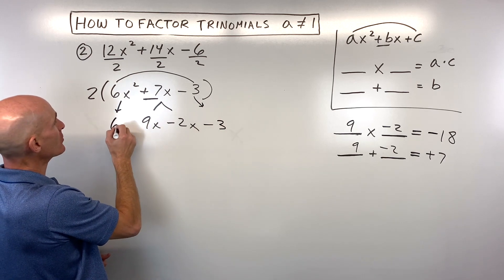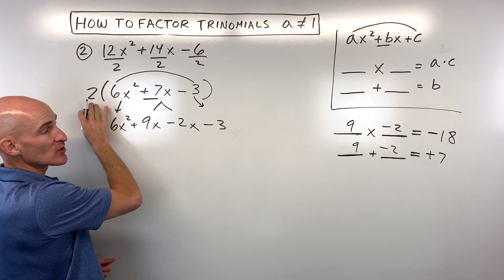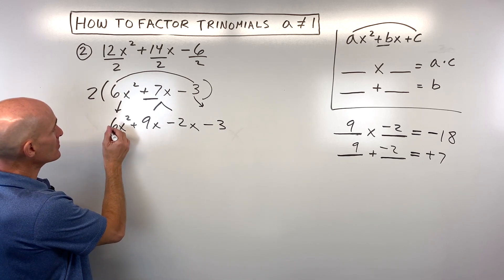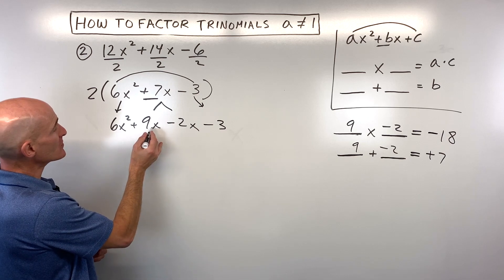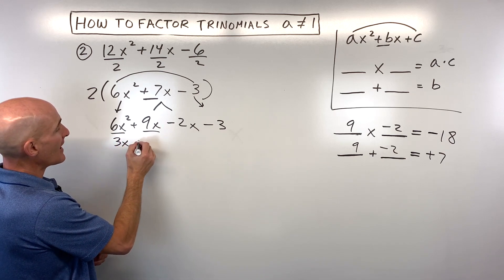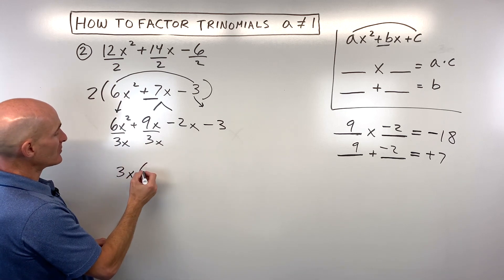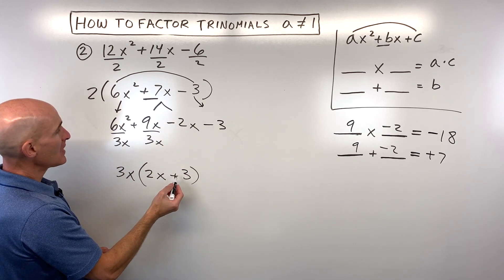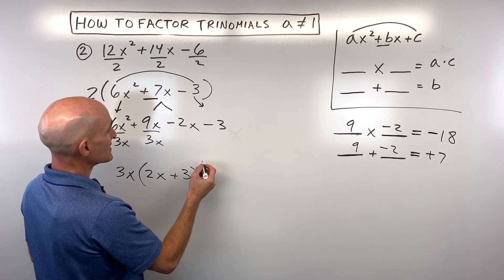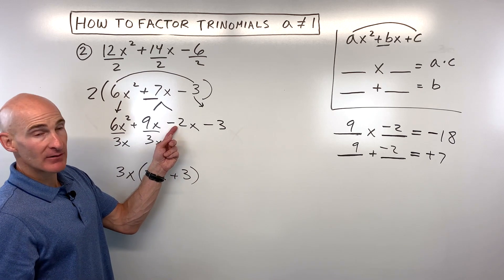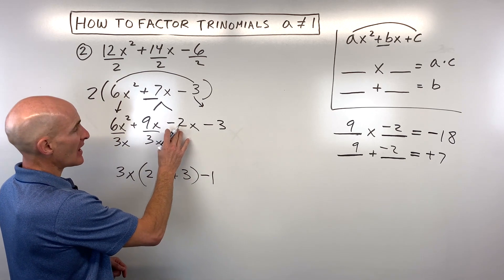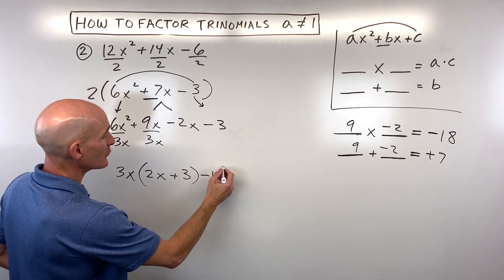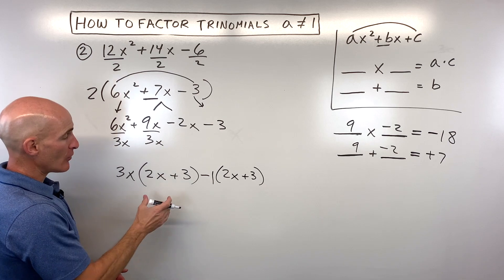Taking these two numbers, split the middle term 7x into 9x minus 2x, then bring down the first and last terms. We set the factor of 2 aside and bring it back at the very end. With four terms, we factor by grouping. Looking at the first two terms, the greatest common factor is 3x, leaving 2x plus 3. For the second group, since the first term is negative, factor out negative 1, which also leaves 2x plus 3.